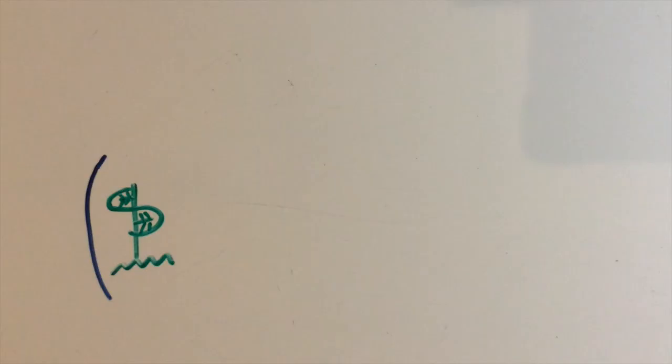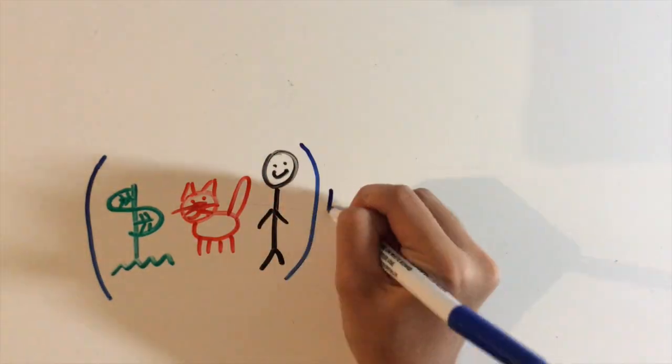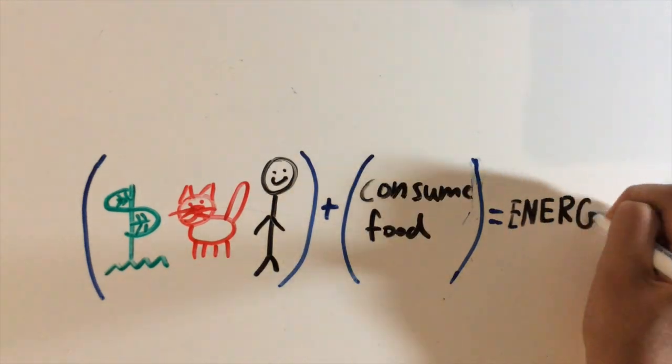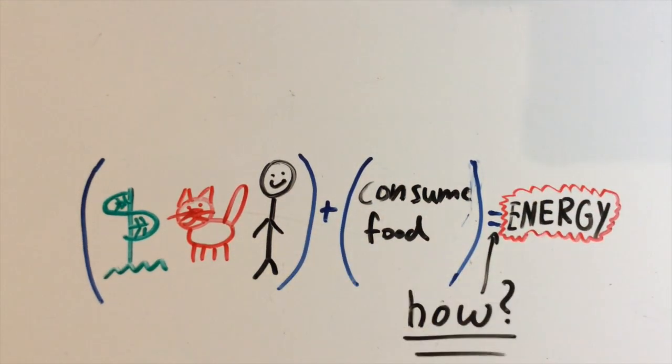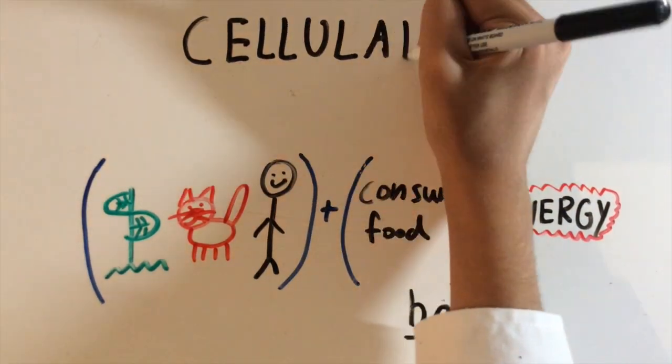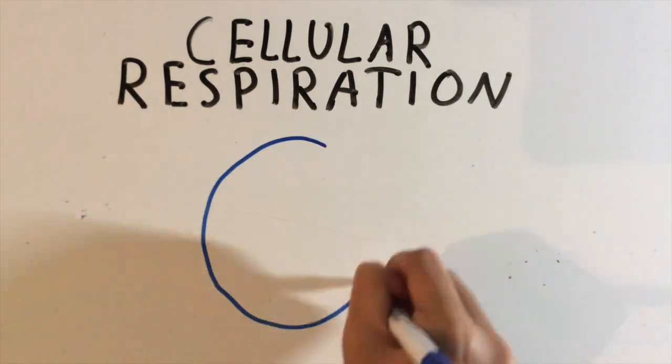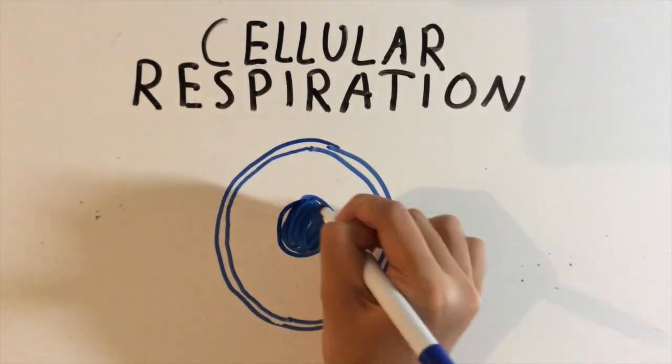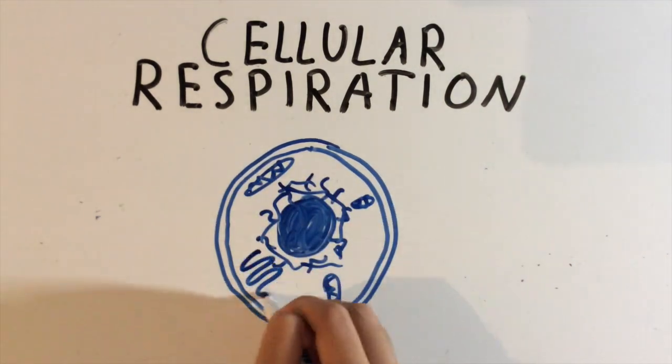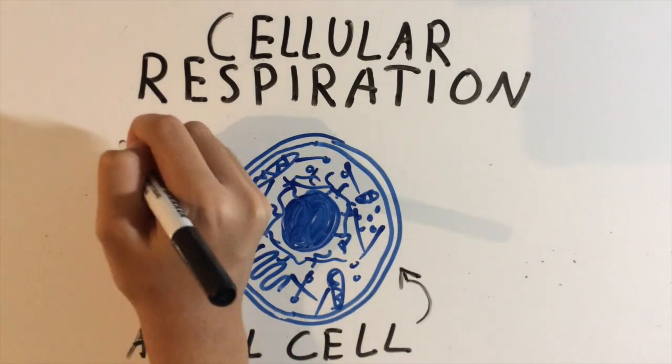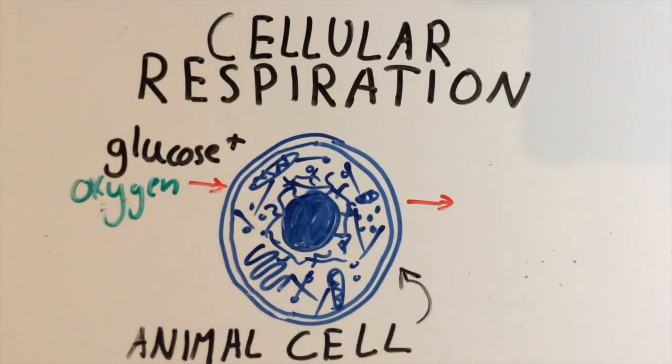So how do plants and animals get energy from glucose and consumed food? It all happens in a process called cellular respiration. In cellular respiration, glucose and other molecules are broken down by your cells using oxygen, which releases energy. Glucose is stored when it's consumed, and when the cells need energy, they break down the glucose into usable energy called ATP.